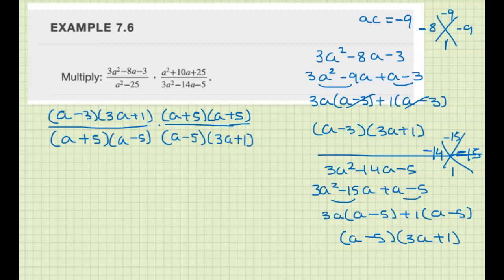So basically we're smushing these together. Everything is factored. And now you're looking to cancel factors from the top and bottom. So I see a 3a plus 1 factors, a plus 5 factors cancels. And nothing else cancels.